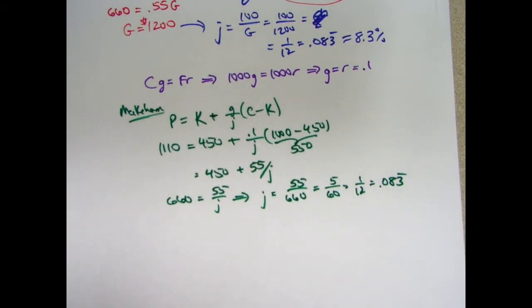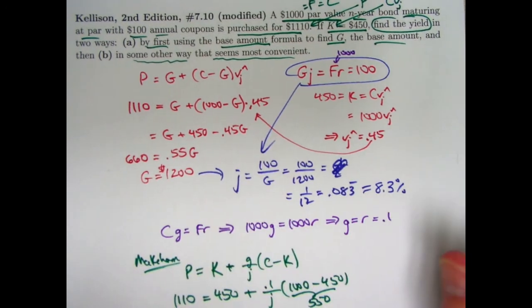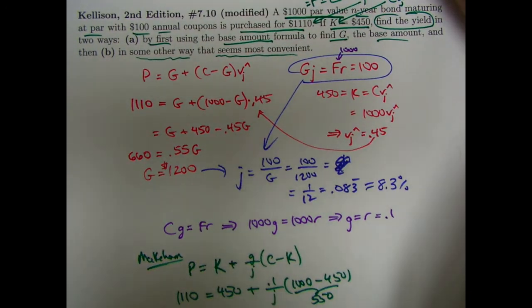So that would be another fairly convenient way to find the effective annual yield rate here. These coupons are annual coupons. Thanks for watching.